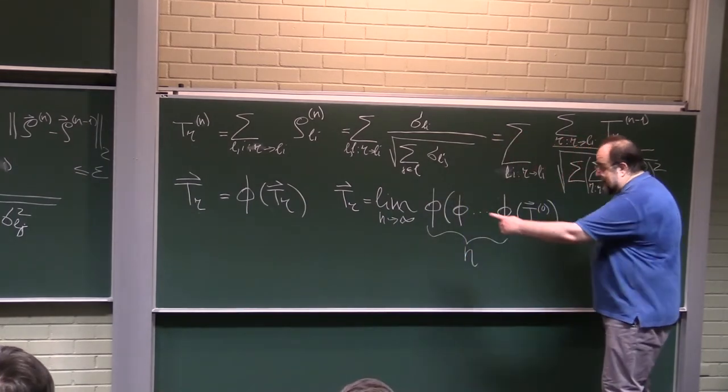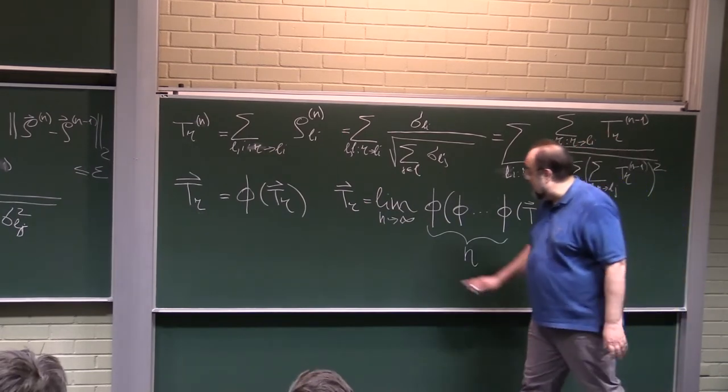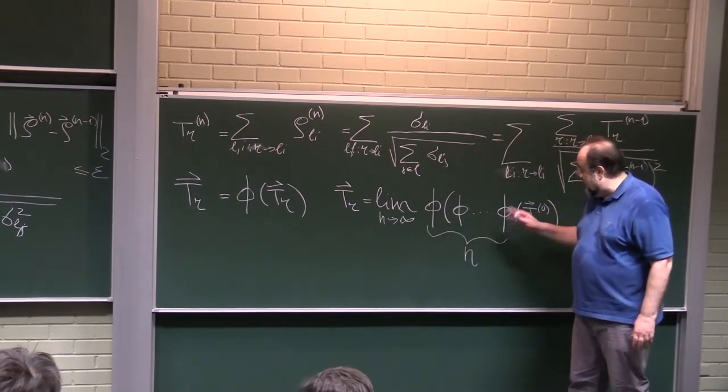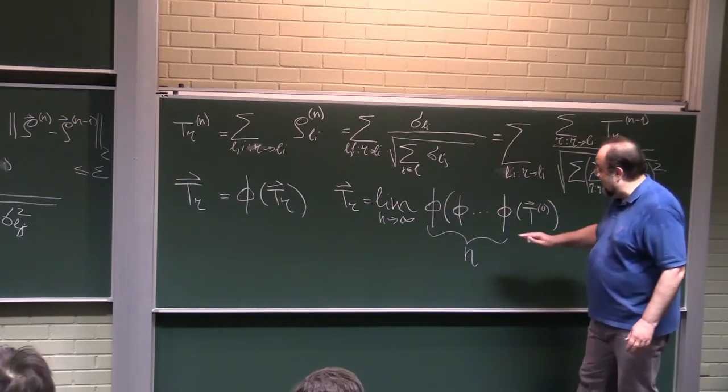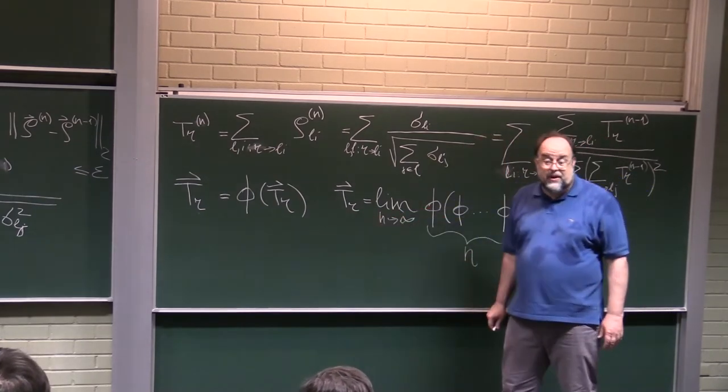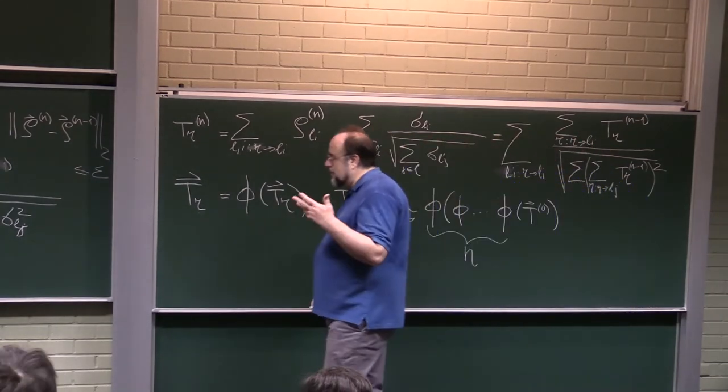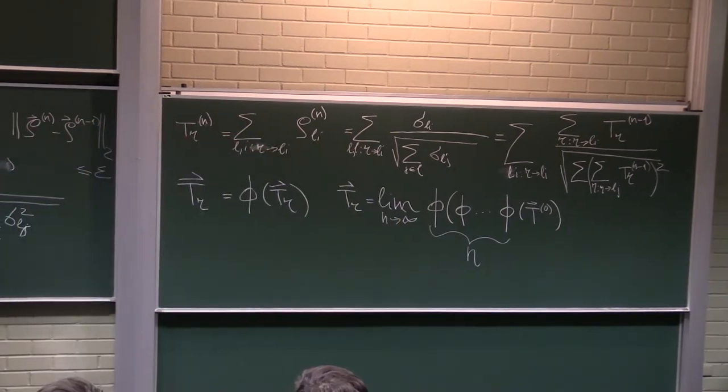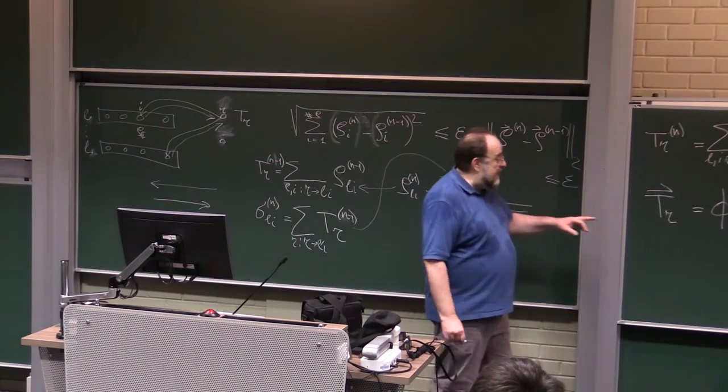And moreover, one can show that TR is simply limit when N goes to infinity of phi applied to phi applied to phi applied to the initial vector T zero. And this is N times. And this tells you why our algorithm works, because eventually, as you keep, each round of iteration applies this function once, and of course, as N grows, this approaches the fixed point.